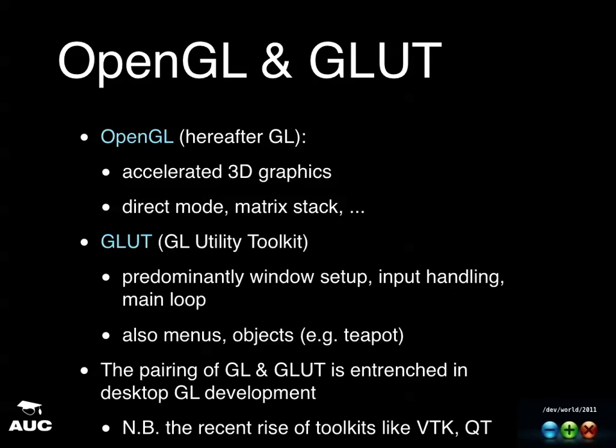OpenGL — accelerated graphics hardware these days is quite extraordinary. Your graphics card is about 100 to 1000 times more powerful than the CPU. OpenGL on your desktop is generally direct mode OpenGL, where you say 'begin triangles, here's some vertices, now draw them.' GLUT is the GL utility toolkit and this is what lets you set up windows in an operating system-independent manner. It has the main event loop — that's quite critical. When you write a GLUT program, you hand control over to the GLUT event loop, and the only way you get program flow back to your user code is through callbacks. Think delegates. GLUT can also provide menus and objects — for example, there's a call to draw a teapot.